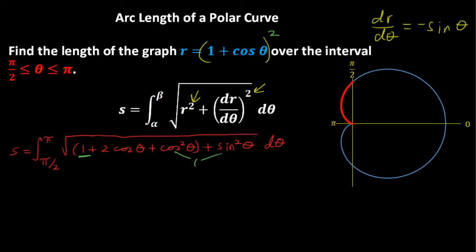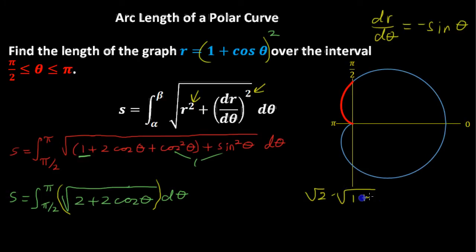Okay, let's rewrite all this to clean it up. So now we have this nice and tidy, the integral of the square root of 2 plus 2 cosine of theta, dθ. But it's not tidy enough, that's a pretty difficult integral the way it is. So let's rewrite this part, this square root of 2 plus 2 cosine of theta. The first thing I'm going to do is factor out the square root of 2. So square root of 2 times the square root of 1 plus cosine of theta.